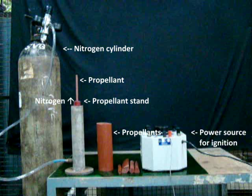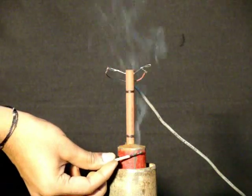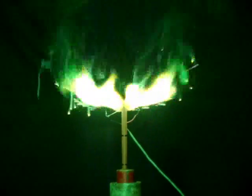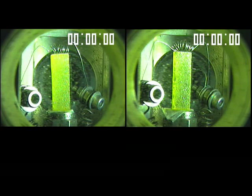Solid propellant combustion does not need an external oxidizer. A piece of double-based propellant is placed such that it is surrounded by nitrogen. You can see the flame is extinguished in the nitrogen stream. The propellant is electrically ignited here using a nichrome wire. The propellant burns at about 2.5 millimeters per second.